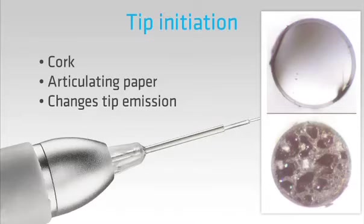The material coated onto the end of the tip from the cork or carbon paper becomes very hot when the laser is used. We can use the same method to coat the side of the tip for doing an external bevel cut during a gingivectomy.